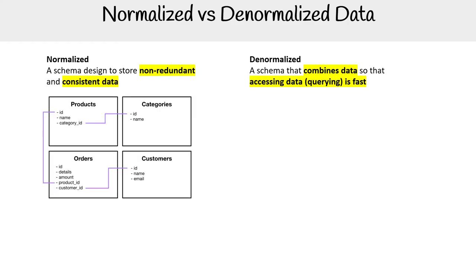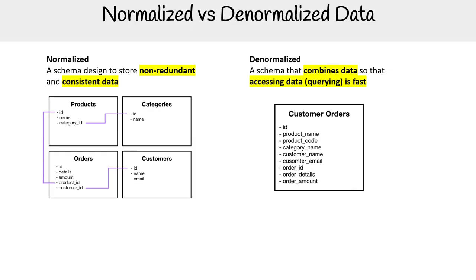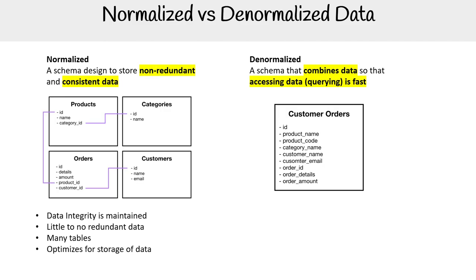When we see tables and relationships, like a relational table where everything is very discretely organized, this is normalized data. On the left hand side, normalized data integrity is maintained, there is little to no redundant data, many tables, and it is optimized for storage of data.